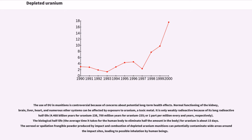Normal functioning of the kidney, brain, liver, heart, and numerous other systems can be affected by exposure to uranium, a toxic metal. It is only weakly radioactive because of its long radioactive half-life: 4.468 billion years for uranium-238 and 700 million years for uranium-235, respectively. The biological half-life — the average time it takes for the human body to eliminate half the amount in the body — for uranium is about 15 days. The aerosol or spallation frangible powder produced by impact and combustion of depleted uranium munitions can potentially contaminate wide areas around impact sites, leading to possible inhalation by human beings.